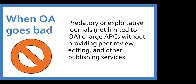There are predatory or exploitative journals — and this isn't limited to open access — that charge article processing charges but don't do the things that make a journal legitimate. They're not providing peer review, they might not do any copy editing or layout; they may just receive a manuscript, not even look at it, and publish it. That is not what we want to happen to our scholarship as we go through processes like peer review, tenure, and promotion. We want to make sure we're publishing in journals that check the quality of their work before putting it out.